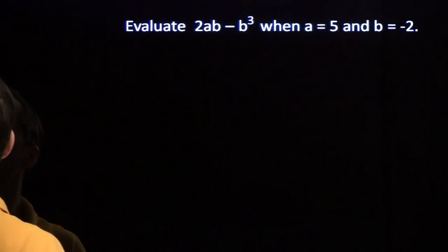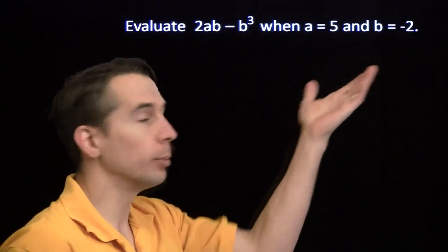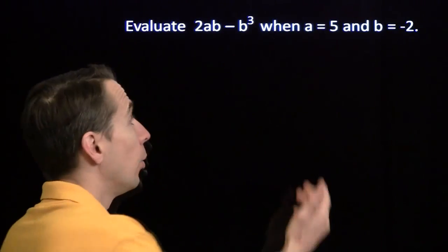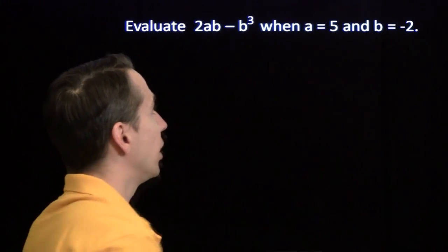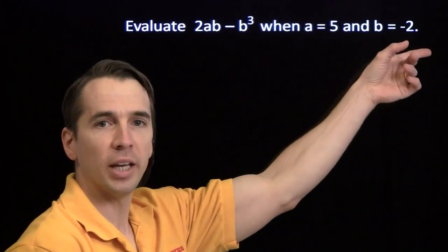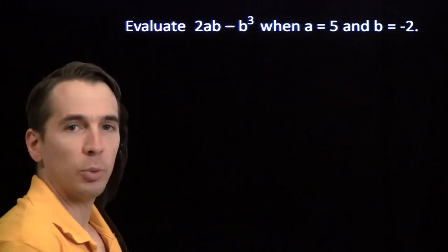What happens if we throw in some more variables? Here we have two variables. We have the value of each variable. a is 5, b is negative 2, and we have this expression that we have to evaluate.